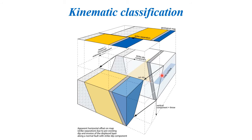The length of the net slip vector provides the amount of displacement on the fault, which is generally the addition of several movements. The components of net slip parallel to the strike and dip of the fault plane are called the strike-slip and dip-slip components respectively. Rake is the angle measured within the fault plane down from the strike direction — the angle between the net slip direction and the strike, measured on the fault plane itself.